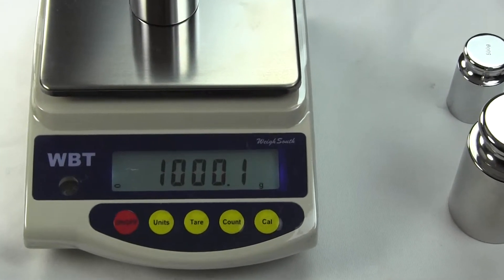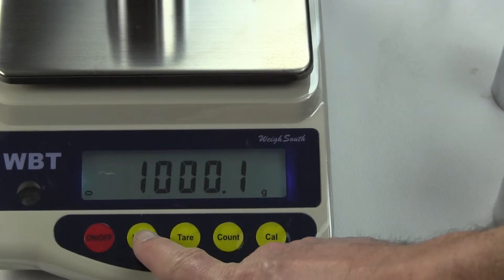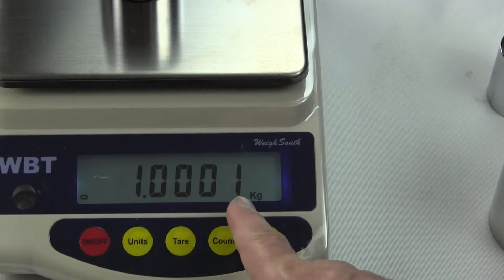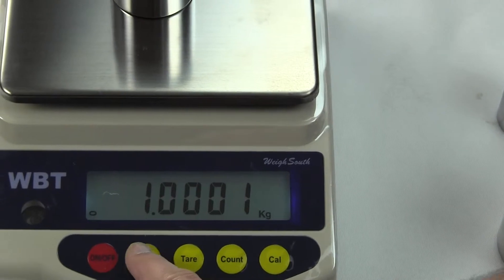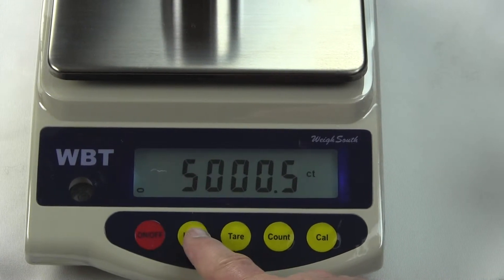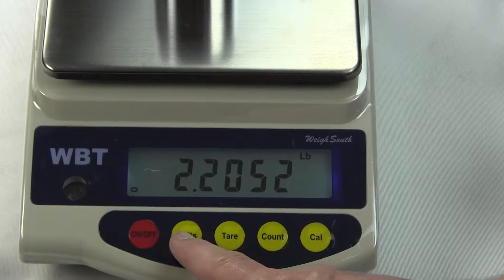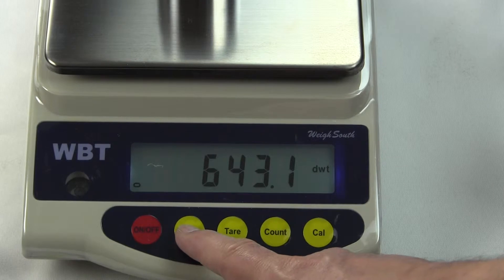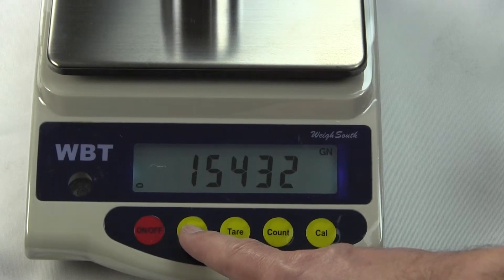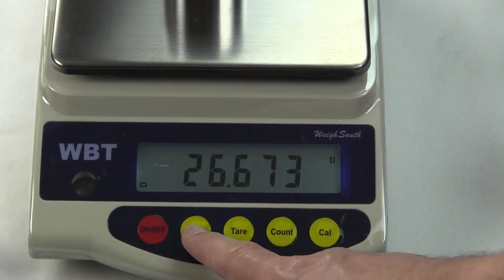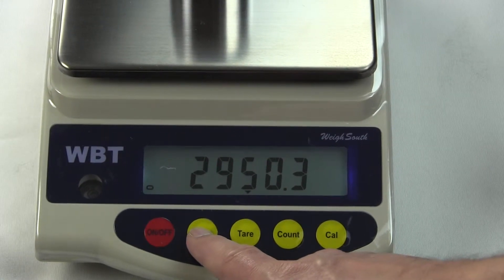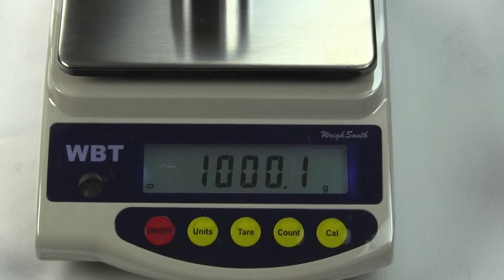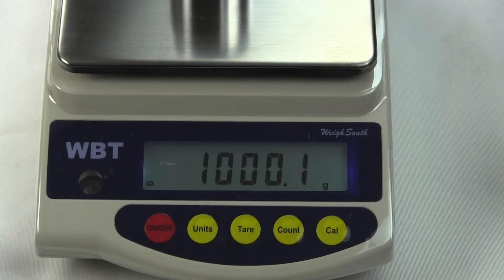To change the weigh modes one simply presses the unit key. If I press the unit key once, you'll notice the units will change. Now we're in kilograms, and then we can go to ounces, carats, pounds, tael, troy ounces, pennyweight, grains for the shooters, and these are all units overseas, and then we're back to grams.